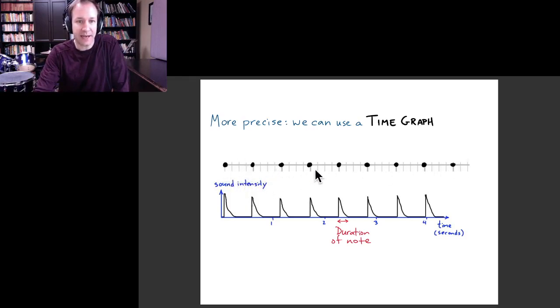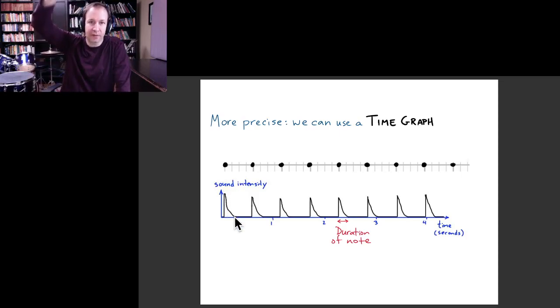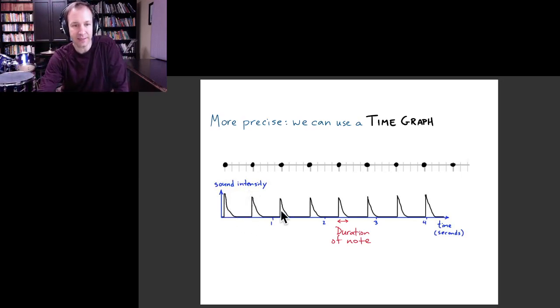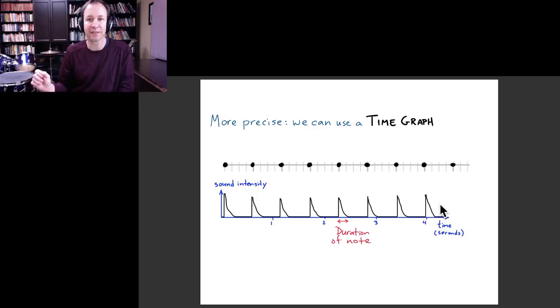And so whereas in the timeline we just see these dots as indicating when the rim sounds happened, here in the time graph it's a little bit more precise. So we can see that when I hit the rim of the snare, the loudness or the sound intensity increases. And then it's not just an event that happens at an instant in time. Then there's a little bit of time after that where the sound decays, where it gets quieter and there's no sound for a while. And then the next hit happens and then that gets quieter in a particular way. And so you see that that repeats, it's not exactly periodic because I'm not perfect at hitting the rim of the snare drum, and so maybe some of them are slightly louder and some of them are slightly quieter.